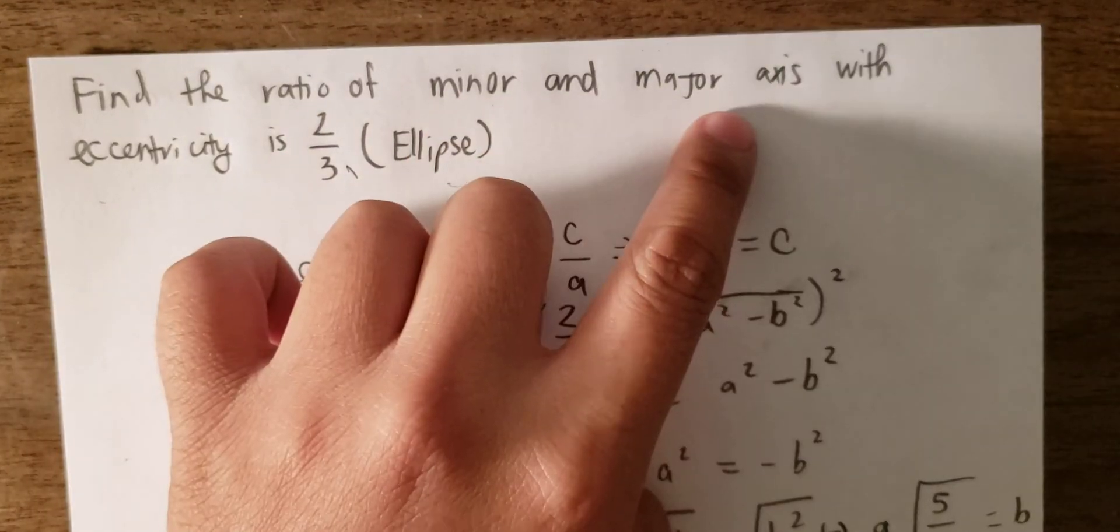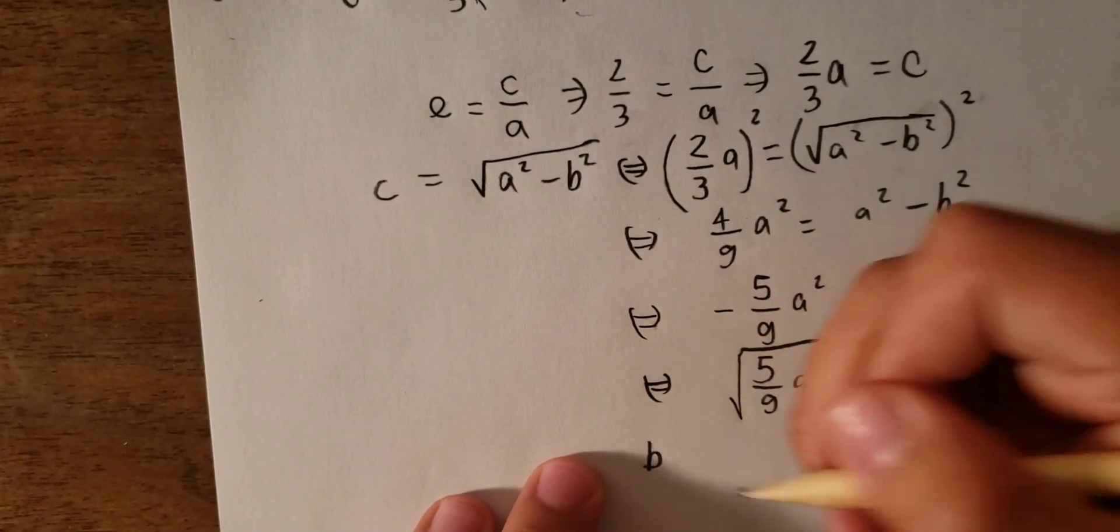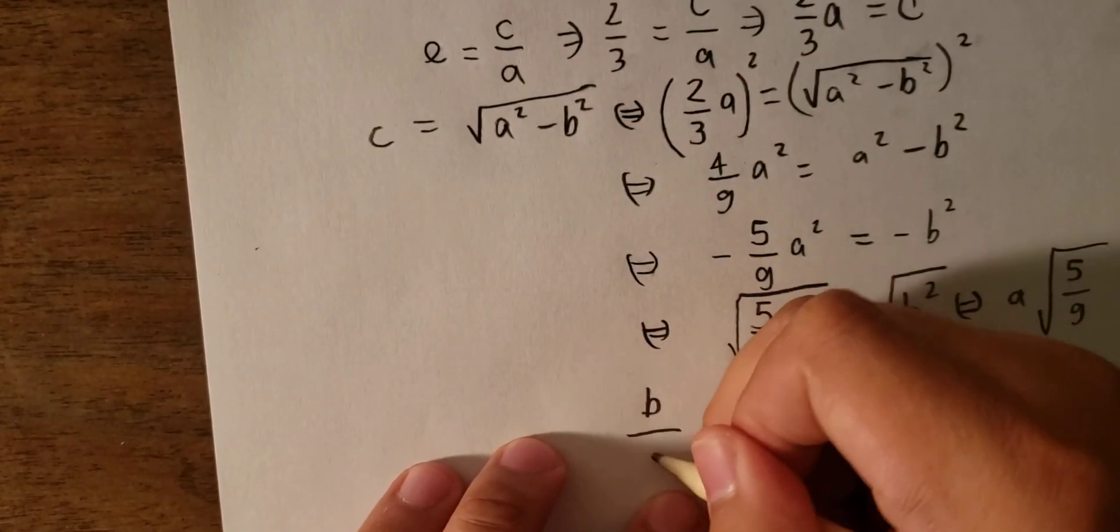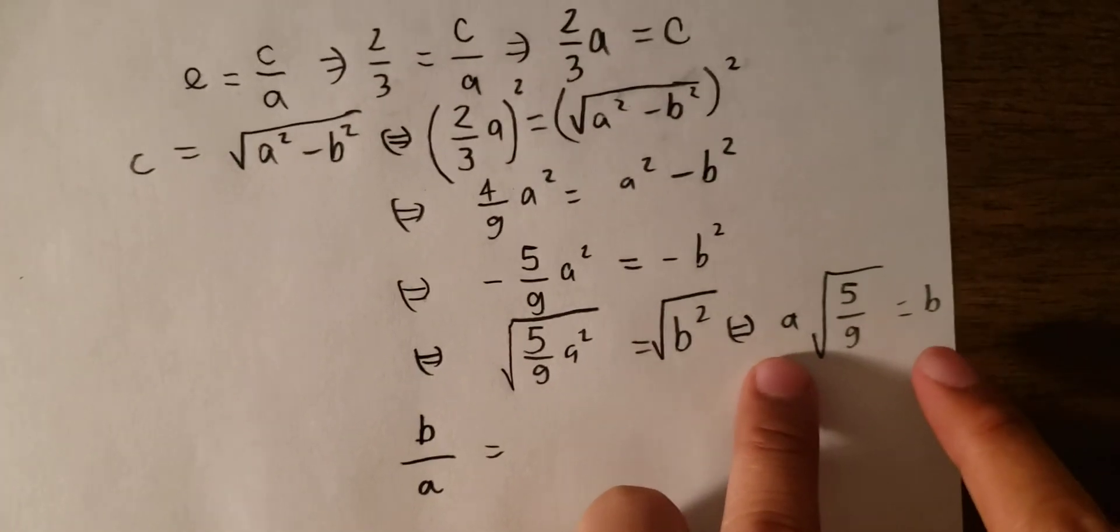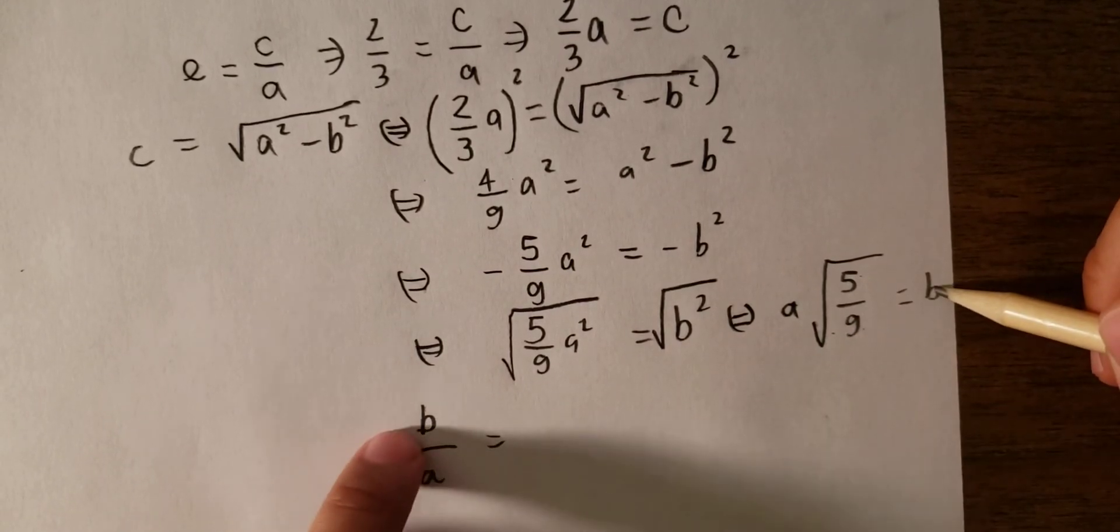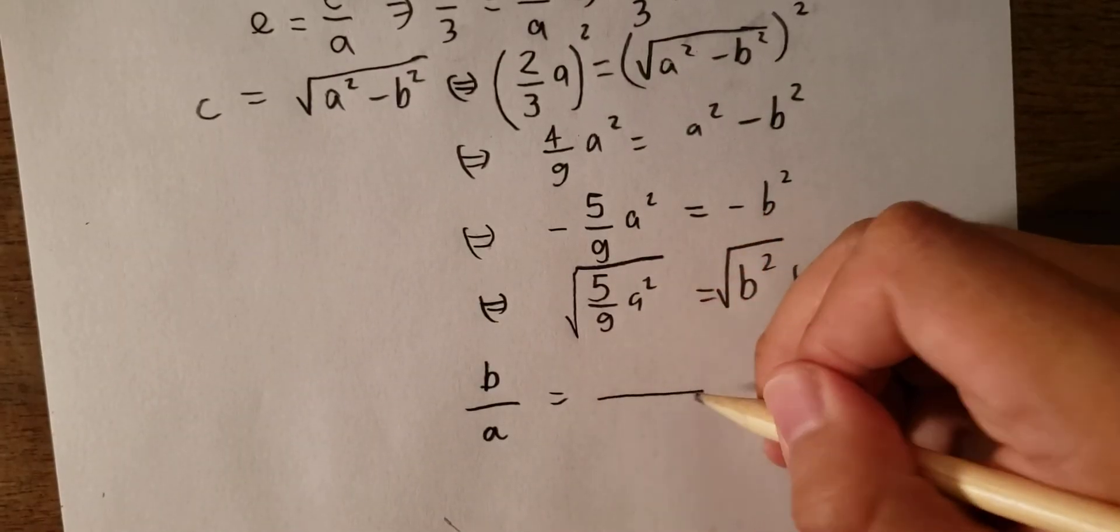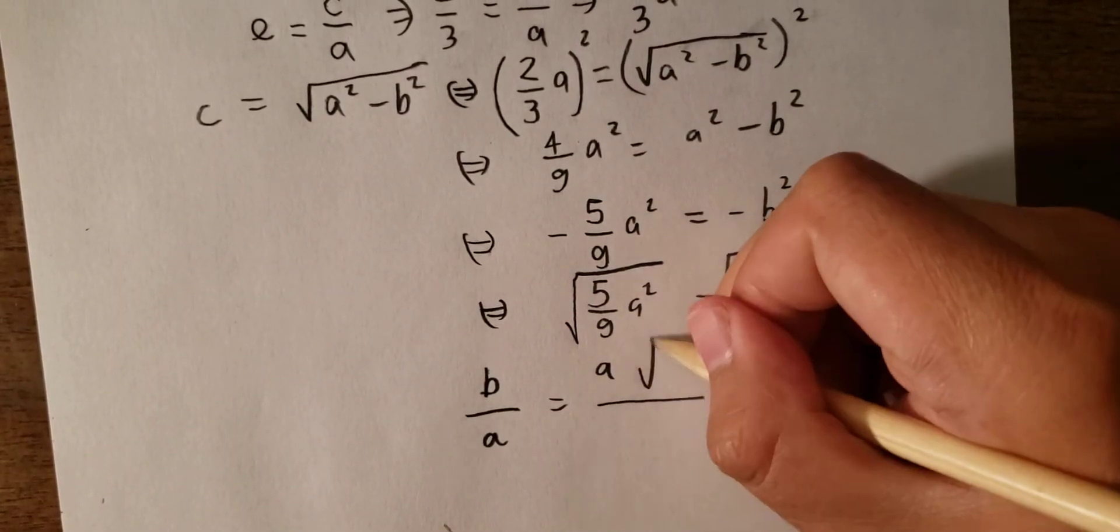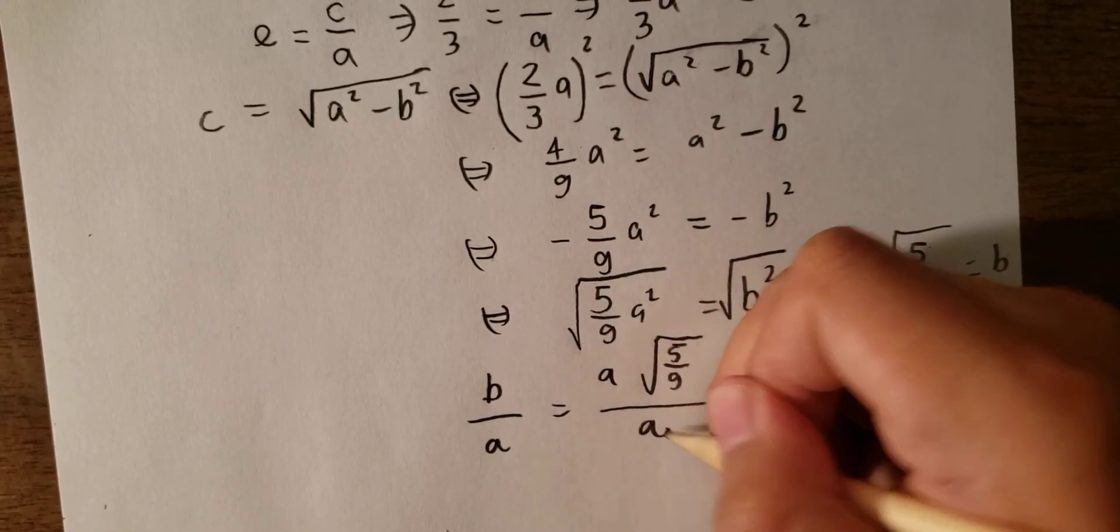So the question asks about the ratio between the minor and the major, so we have the minor is about b and the major is about a. But in here, we just calculated a multiplied with the square root 5 over 9 equal to b. So we convert the b to this one and we get about a with the square root 5 over 9 divided by a.